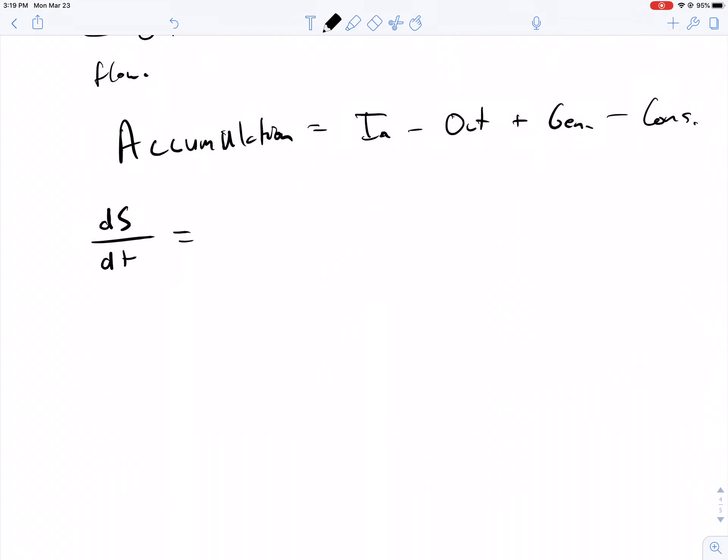dS/dt equals the sum over all streams for whatever system you're studying: the mass flow rate of k times the entropy per unit mass of k, plus the conductive heat term, plus the entropy generation term we introduced earlier.